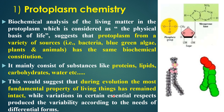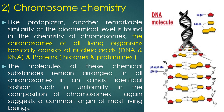This suggests that during evolution, the most fundamental property of living things has remained intact, while variation in certain essential respects produced variability according to the needs of different forms. Chromosome chemistry: another remarkable similarity at the biochemical level is found in the chemistry of chromosomes. The chromosomes of all living organisms basically consist of nucleic acid — either DNA or RNA — and a protein, either histone or protamine. The molecules of these chemical substances remain arranged in all chromosomes in an almost identical fashion, suggesting a common origin of most living beings.